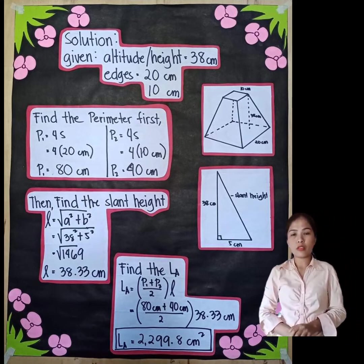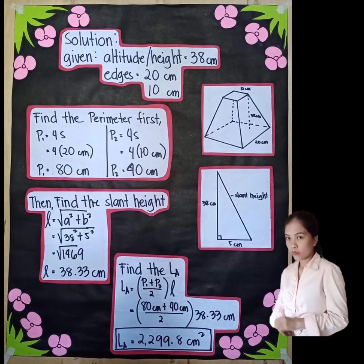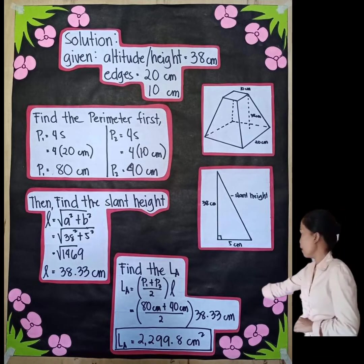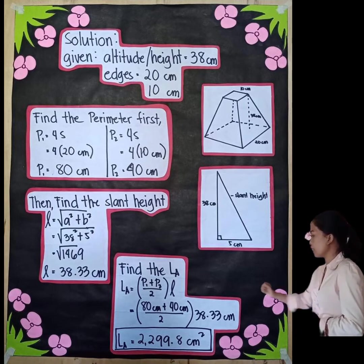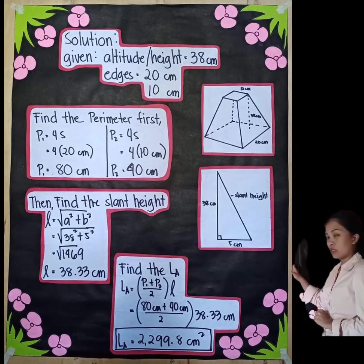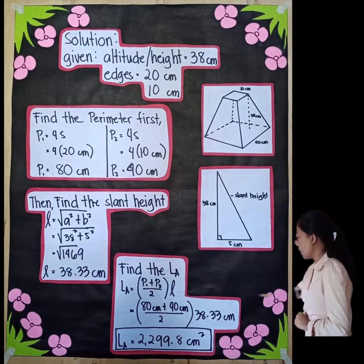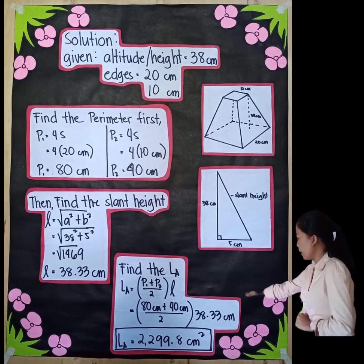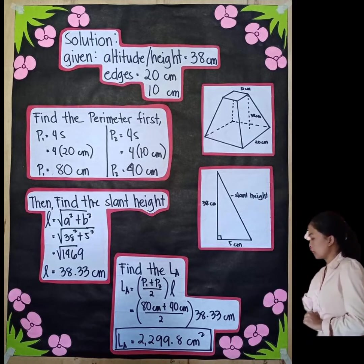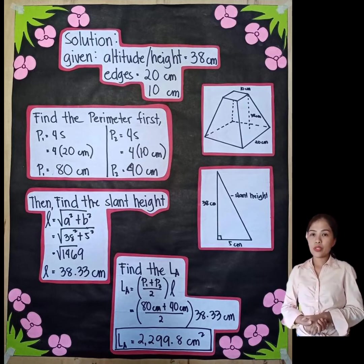After finding the perimeters, we find the slant height using the Pythagorean theorem: l = √(a² + b²), where a = 38 cm and b = 5 cm. This right triangle is obtained from the cross-section of the frustum. Substituting: l = √(38² + 5²) = √1469 = 38.33 cm.